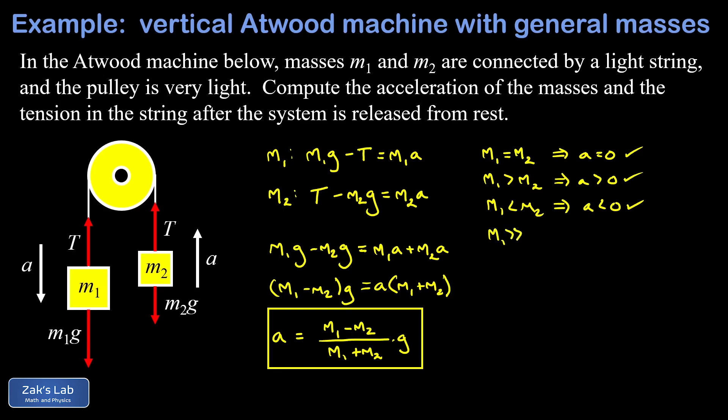I mean way bigger, so I'm imagining like m1 is a bowling ball and m2 is a feather. What happens in that case is that the acceleration should be approaching free fall, it should be the same as g itself. If I look in our formula for the acceleration and imagine that m1 is way bigger than m2, then in the numerator m2 is negligible and that reduces to just m1.